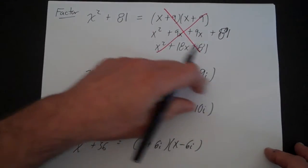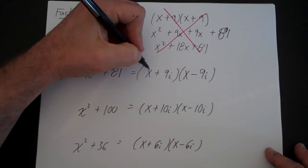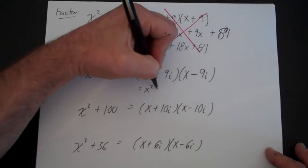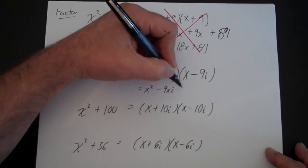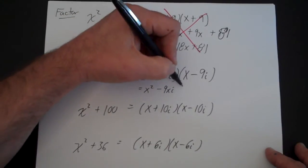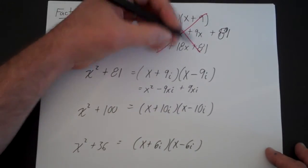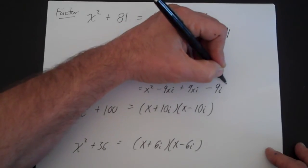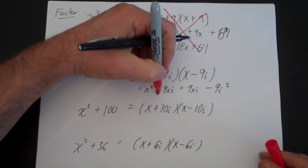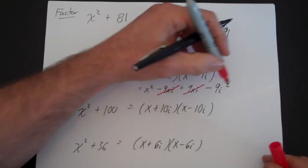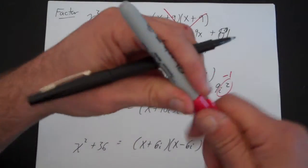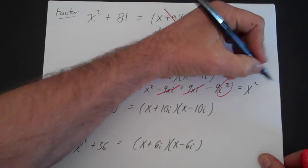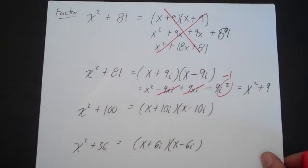We can check our work by FOILing this out. We have x times x is x squared. x times minus 9i is minus 9xi. 9i times x is plus 9xi — those cancel. And 9i times negative 9i gives a minus 9i squared. Since i squared equals minus 1, that becomes minus 9 times minus 1 which is plus 81. So you get x squared plus 81, and that's the reason this works.